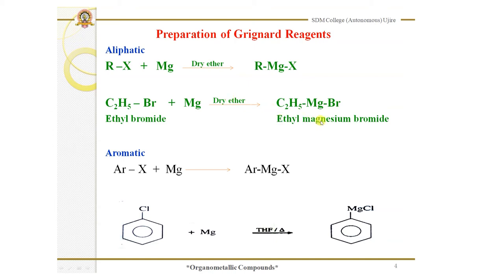Aromatic Grignard reagents are prepared by treating aryl halides with magnesium. For example, chlorobenzene is treated with magnesium in tetrahydrofuran (THF) and the reaction mixture is heated, giving phenyl magnesium chloride. This is how aliphatic and aromatic Grignard reagents are generally prepared.